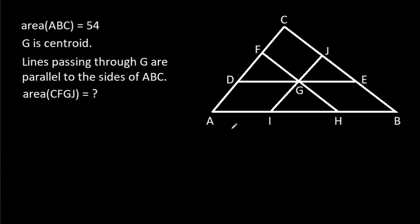In this video, we have been given that the area of triangle ABC is 54 and G is the centroid of the triangle. Lines passing through G are parallel to the sides of ABC. We have to find the area of CFGJ.